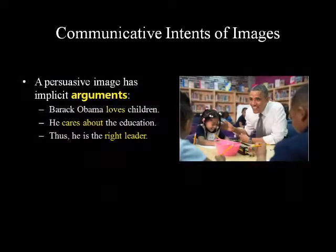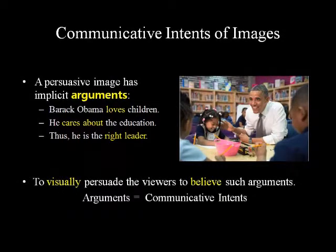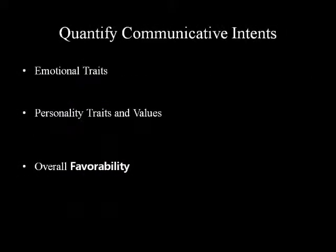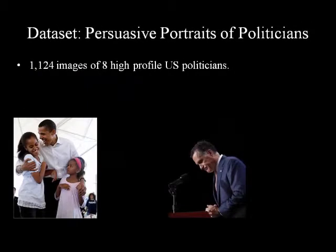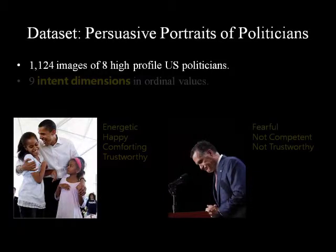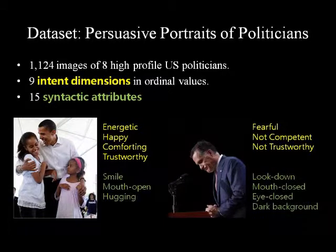A persuasive image has implicit arguments, which are hard to convey by verbal language. To quantify intents, we identify 15 dimensions of emotions, personality traits, and values. We introduced a novel dataset of more than a thousand images of US politicians, labeled with 9 intent dimensions as well as 15 synthetic attributes.